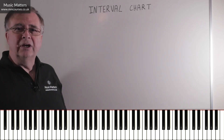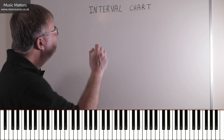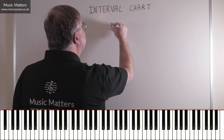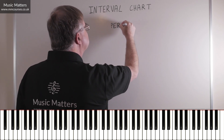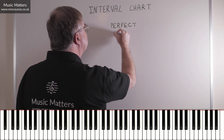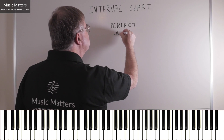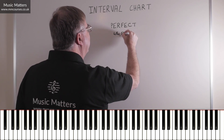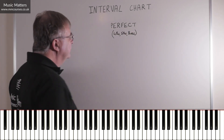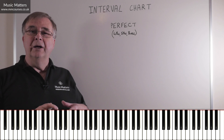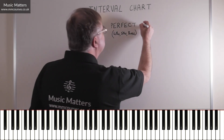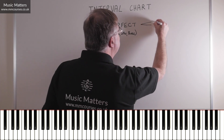You can download this as a PDF, but let me just show you how to do it. We have intervals that are perfect. The perfect intervals are the fourths, the fifths, and the octaves. So if a perfect interval becomes a semitone bigger than perfect, then it becomes augmented.